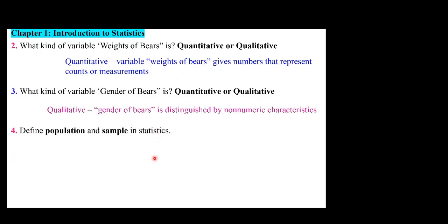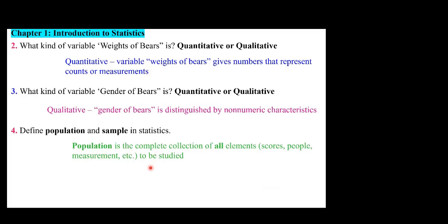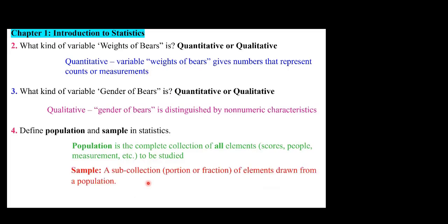Define population and sample. Population is the complete collection of all elements — scores, people, measurements, etc. — to be studied. A sub-collection, portion, or fraction of elements drawn from a population is a sample. In short, population refers to the whole; sample refers to a portion.